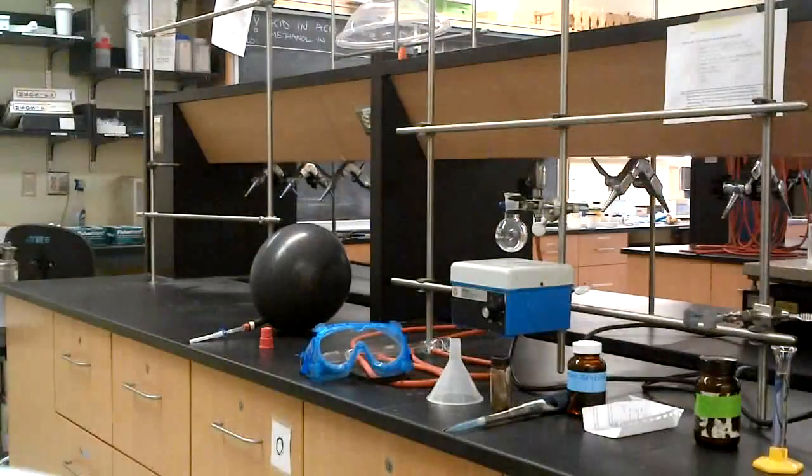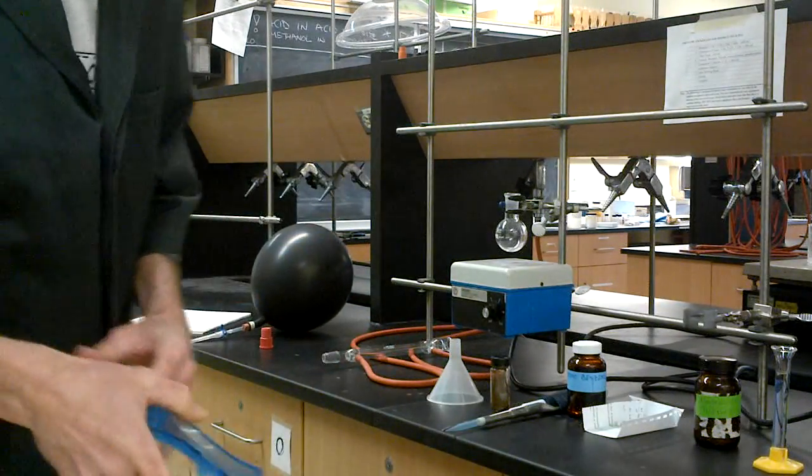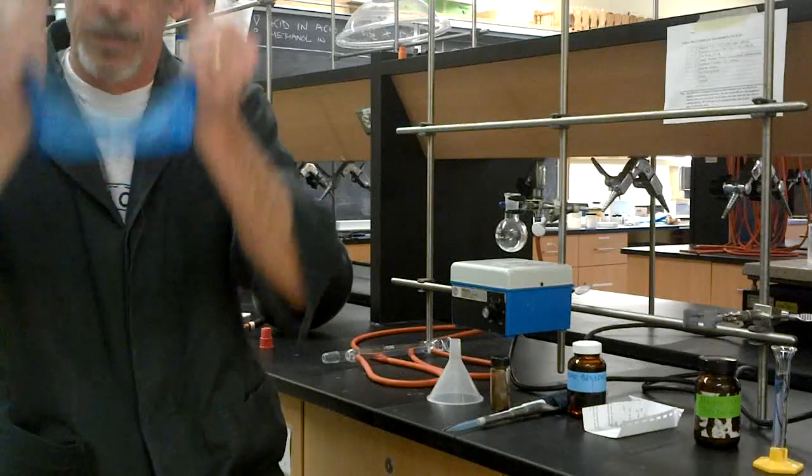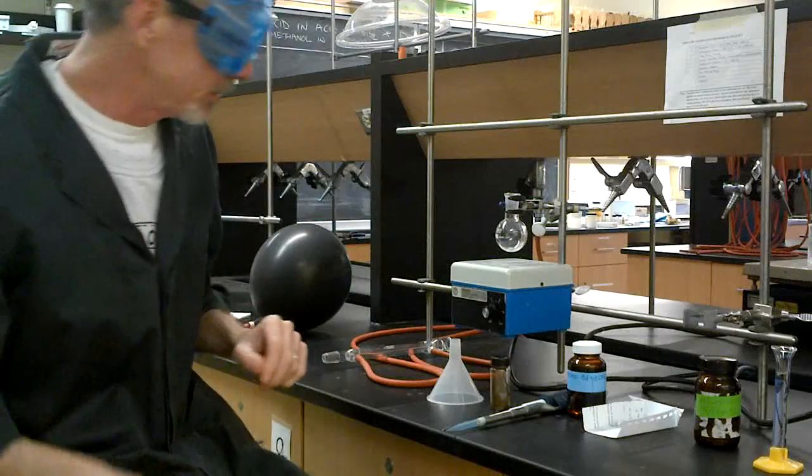It's experiment number eight, the preparation of triphenylmethanol. We're going to make a Grignard reagent and react it with benzophenone to make triphenylmethanol. It's all very straightforward.